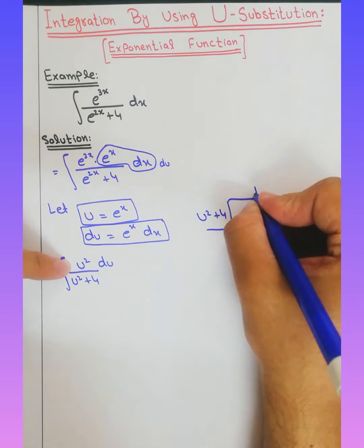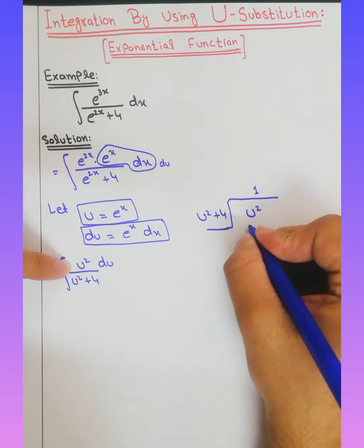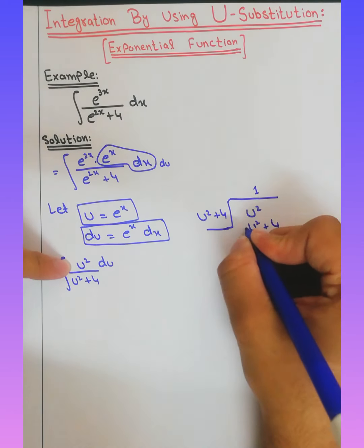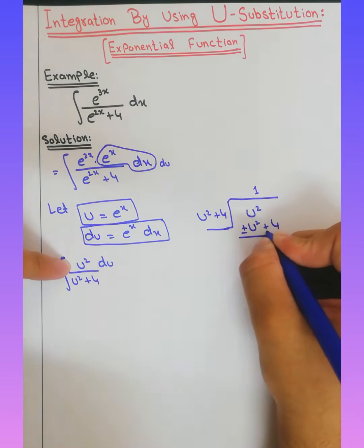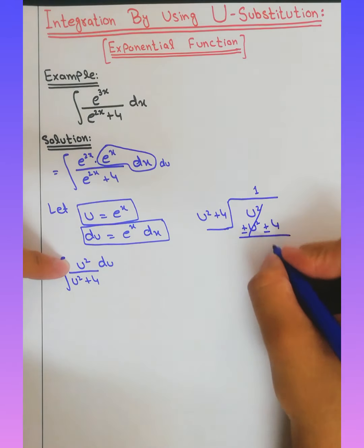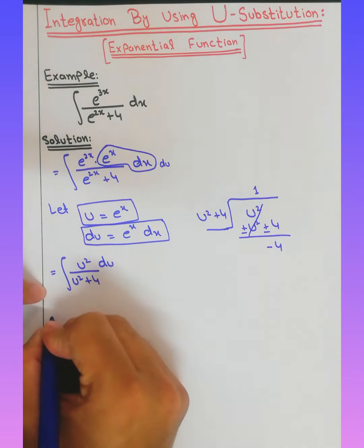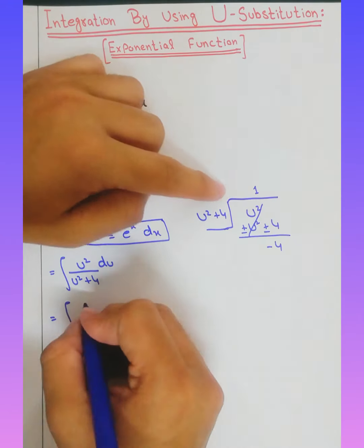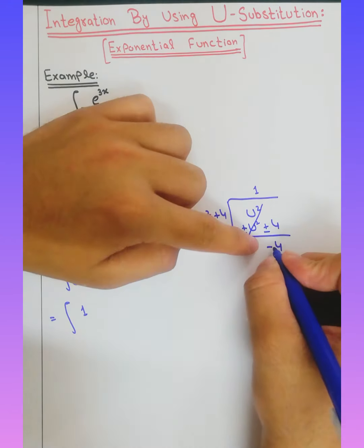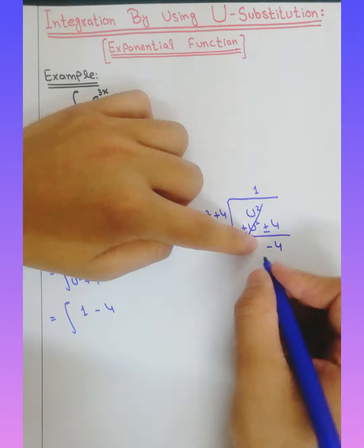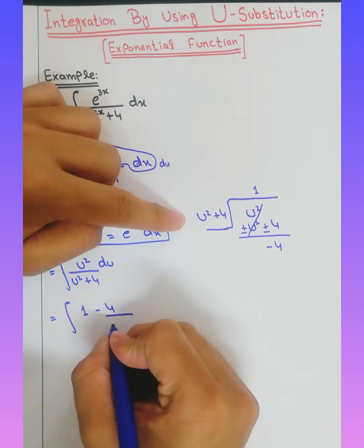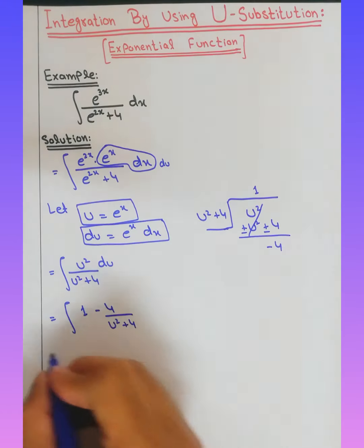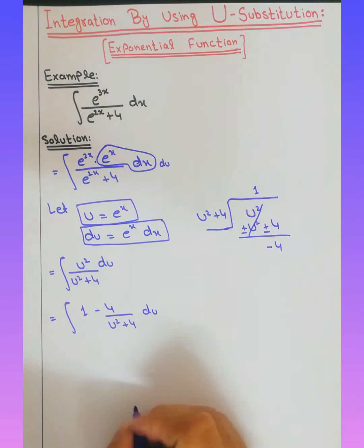So if we solve this: we write u squared over (u squared plus 4) as 1 minus 4 divided by (u squared plus 4). So the integration becomes: integration of 1 minus 4 divided by (u squared plus 4) d of u.